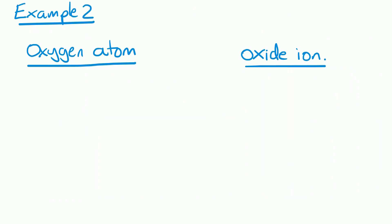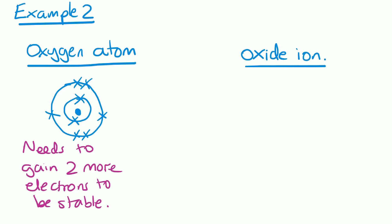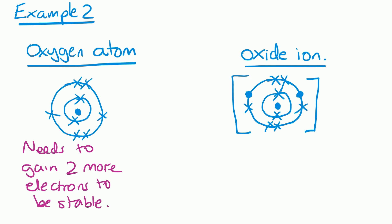Let's look at a second example of a non-metal atom turning into an ion. Oxygen has an atomic number of eight, giving two electrons on the first shell and six on the second shell. Oxygen needs to gain two more electrons to be stable. We draw the oxide ion — notice the name changes from oxygen to oxide — with the two gained electrons shown as dots. We draw square brackets around it, and from the periodic table we can see that Group 6 elements like oxygen make a 2− ion.